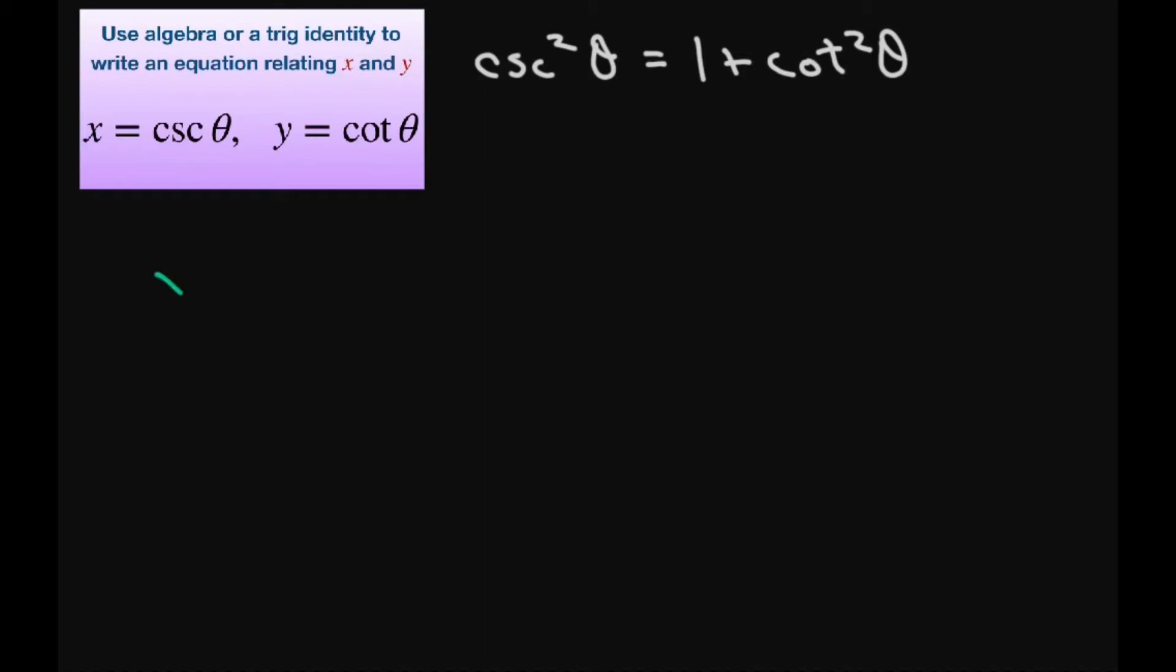Now we have X equals cosecant of theta and Y equals cotangent of theta.